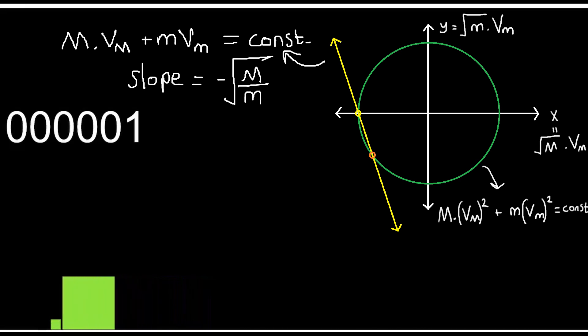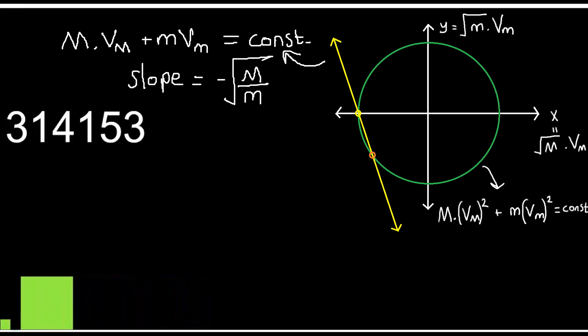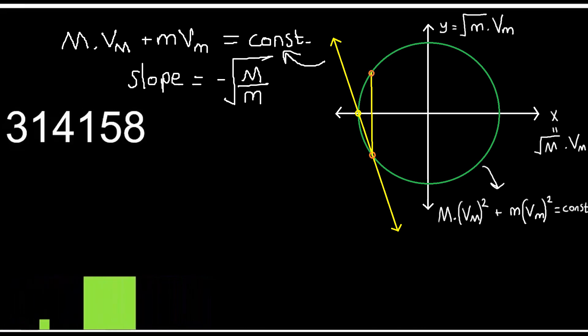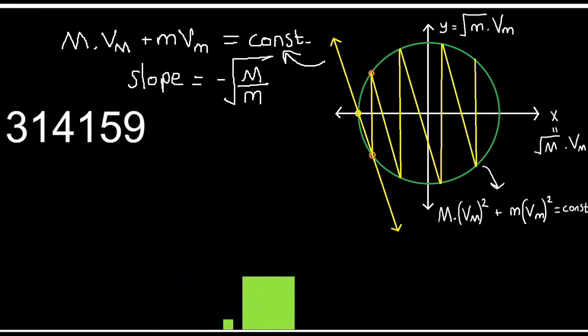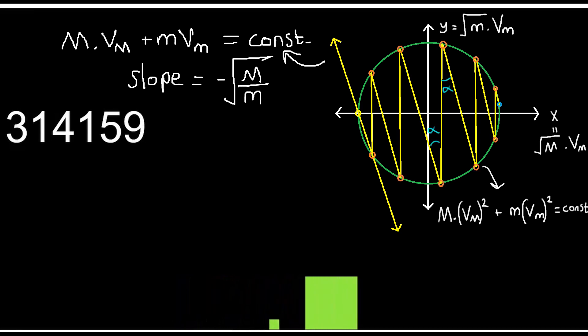After that, when our small mass collides with the wall, the graph continues like this since its velocity only changed direction. Long story short, our graph continues like so, but it has to end somewhere.